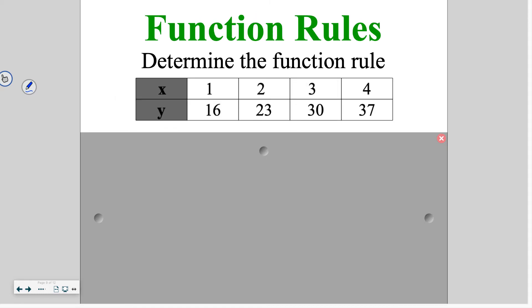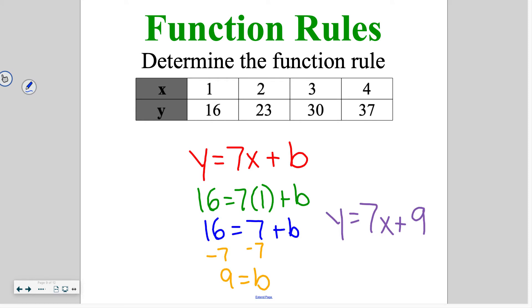Go ahead and try this one on your own. When you are done with the problem, you're going to find that Y is equal to 7X plus 9. I showed the solving for B part. Totally fine if you went through and did the point slope form.